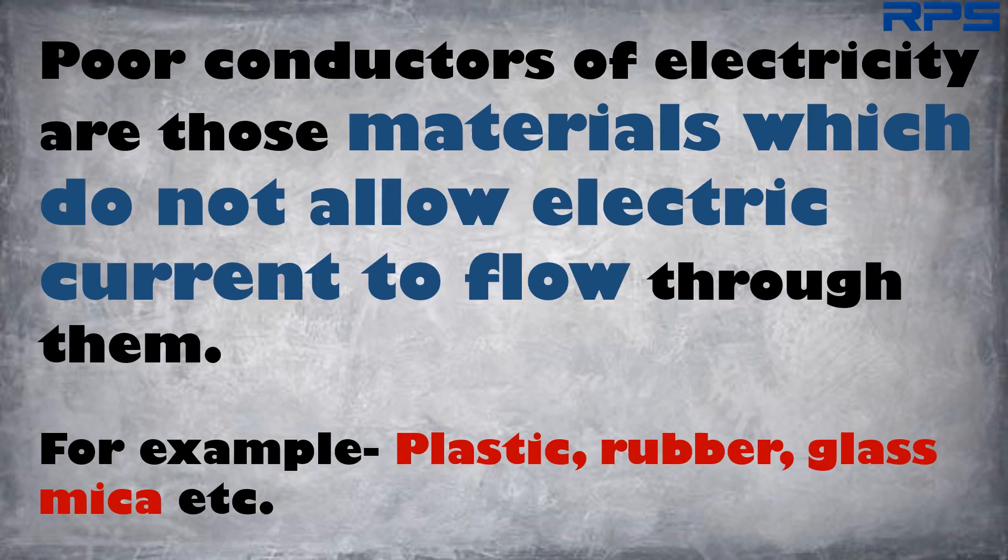Poor conductors of electricity are those materials which do not allow electric current to flow through them. Plastic, rubber, glass, and mica are some examples of poor conductors of electricity.